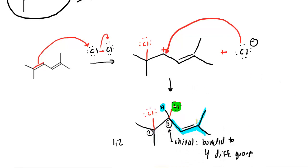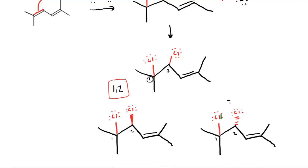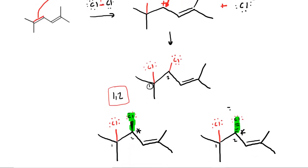The fact that we formed a chiral carbon tells us that two stereoisomers will result — we're going to get both the R and the S. In your homework system, it's not sufficient to draw just one 1,2 addition product; you actually have to draw two. We have drawn both stereoisomers: in one, the chlorine at carbon two is on a wedged bond projecting toward us, and in the other, it is on a dashed bond projecting away. You must draw both to account for the stereochemistry, since carbon two was achiral before the reaction and chiral after.